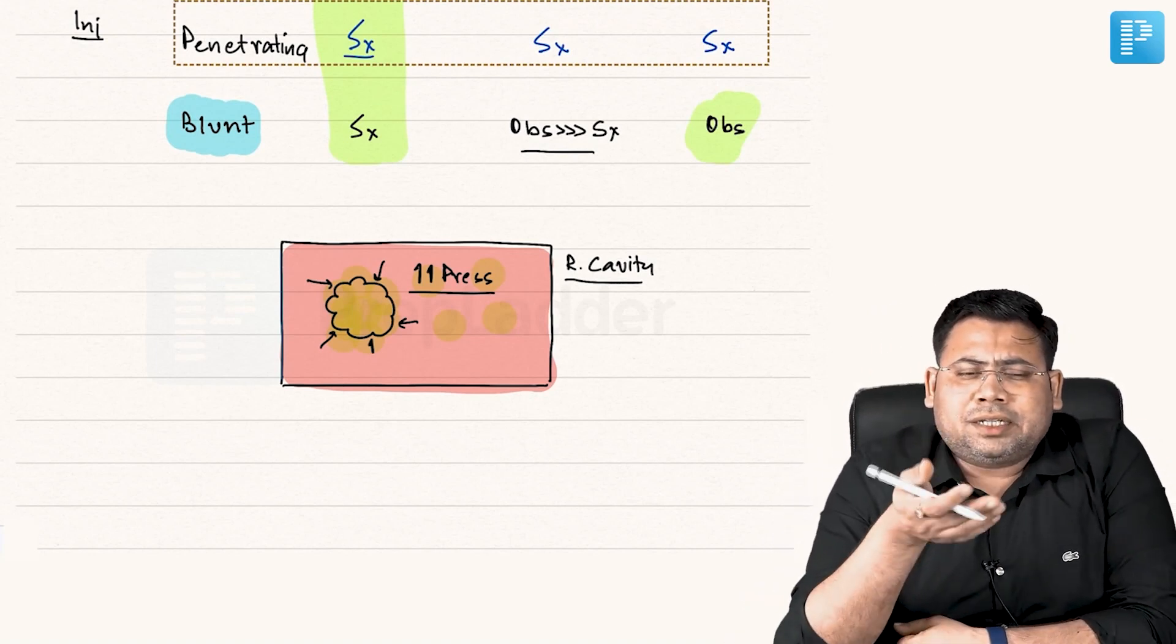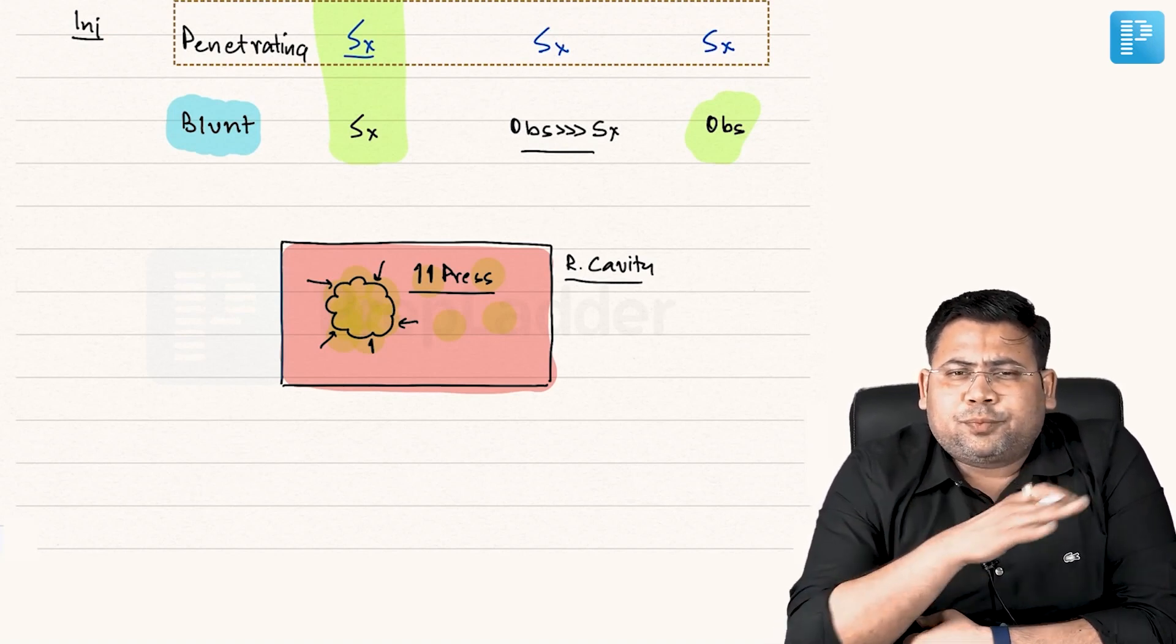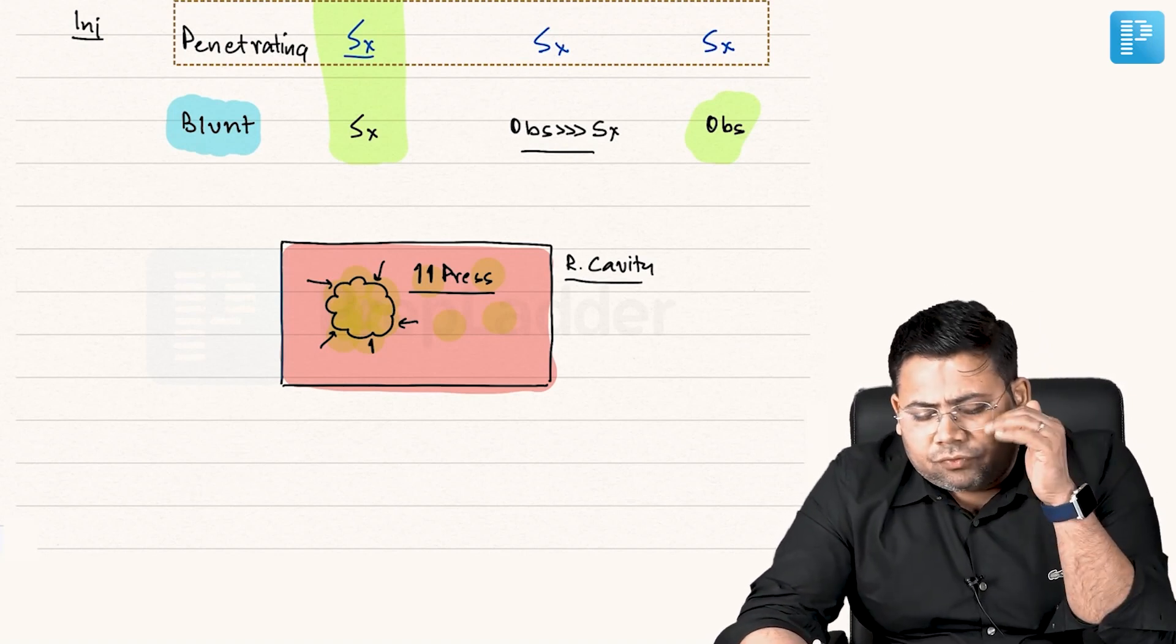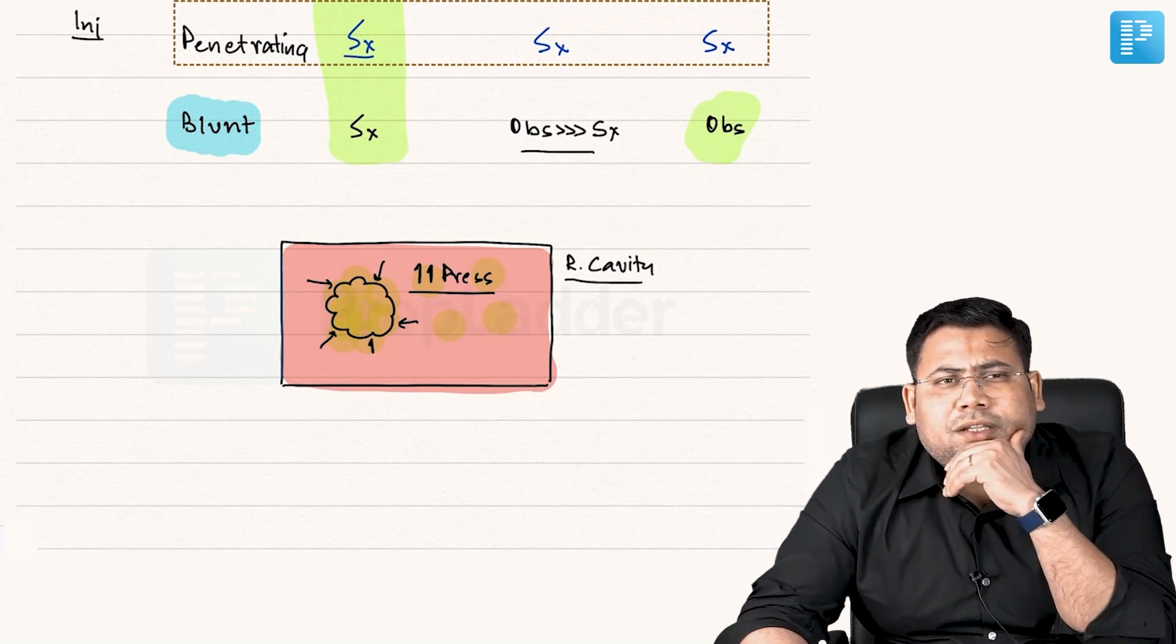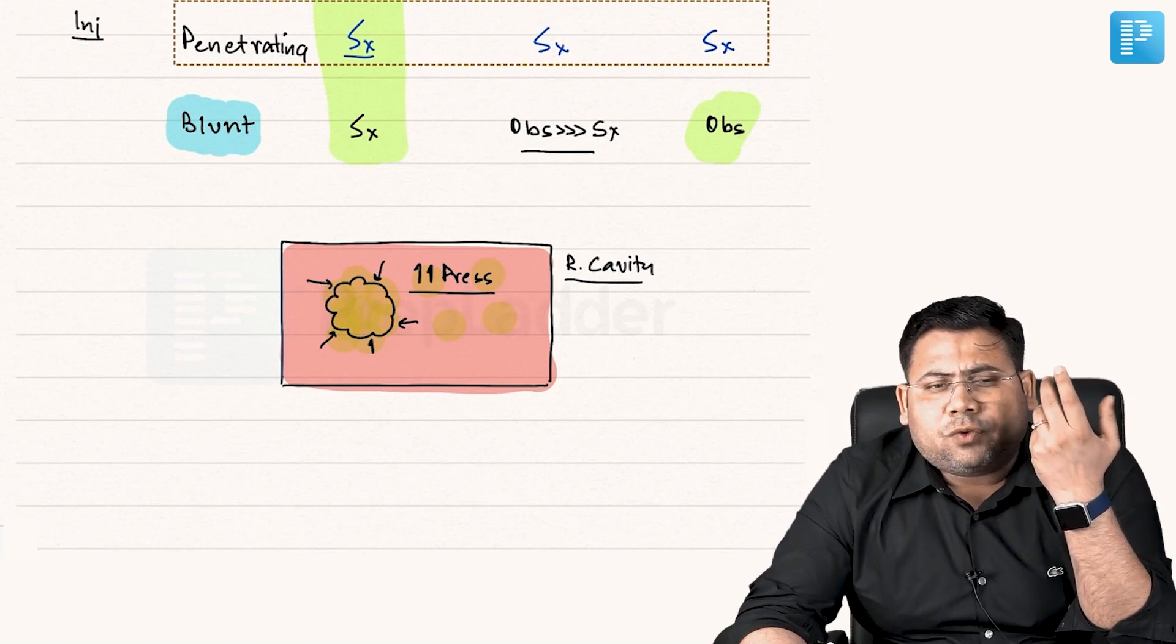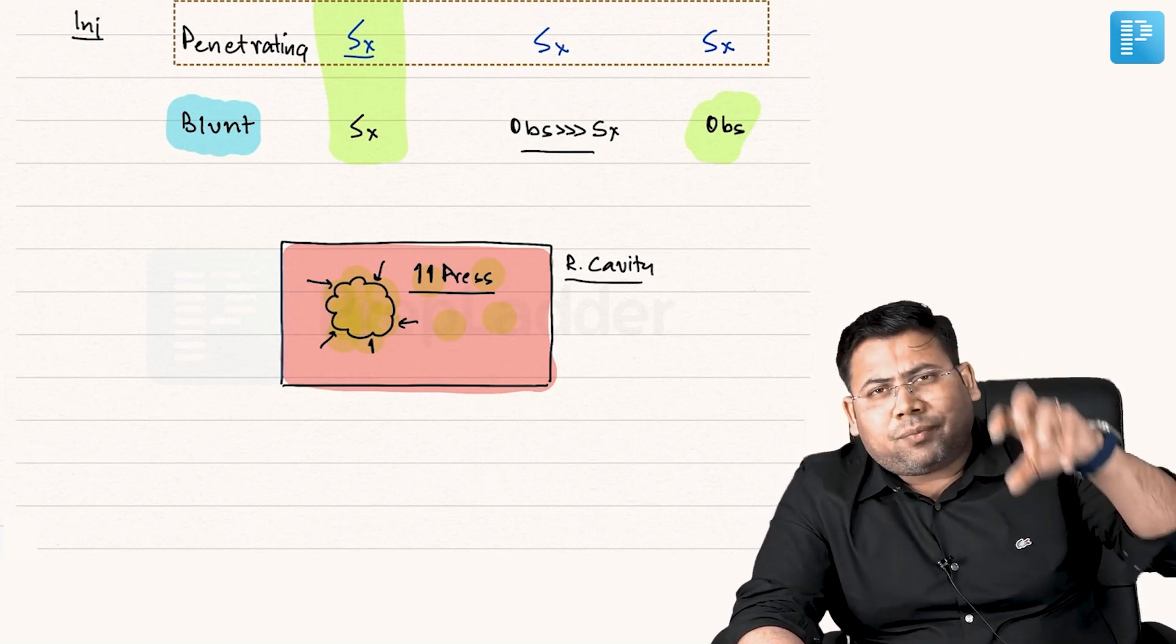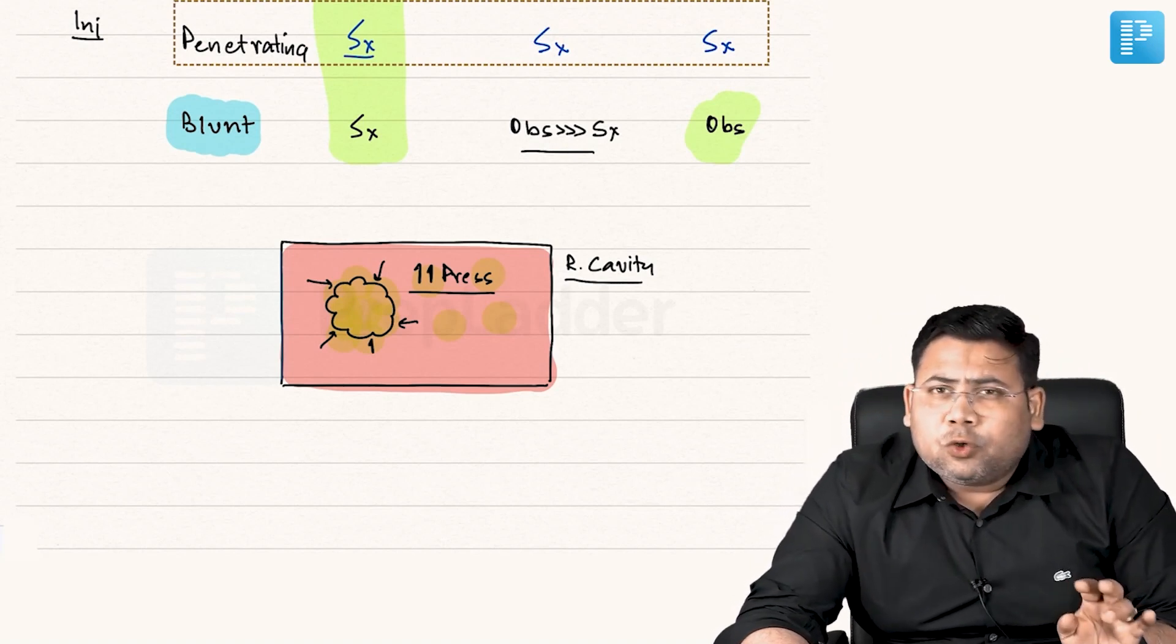I thought my assistant, who was my friend only, who was feeling envy or jealous, he has brushed up the kidney and we had a verbal altercation in the OT itself. Then I placed a mop there and waited for five minutes. Nothing was there. The moment I removed the mop, for one minute it was okay and again the oozing started. Do you know what has happened? Actually, the tamponade which was there by the retroperitoneal hematoma has now been removed.